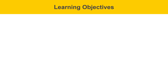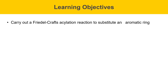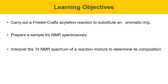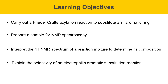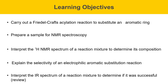Some learning objectives for this experiment are described on this slide. After this experiment, you'll be able to carry out a Friedel-Crafts acylation reaction to substitute an aromatic ring, prepare a sample for NMR spectroscopy, interpret the proton NMR spectrum of a reaction mixture to determine its composition, explain the selectivity of an electrophilic aromatic substitution reaction, and interpret the IR spectrum of a reaction mixture to determine if it was successful.